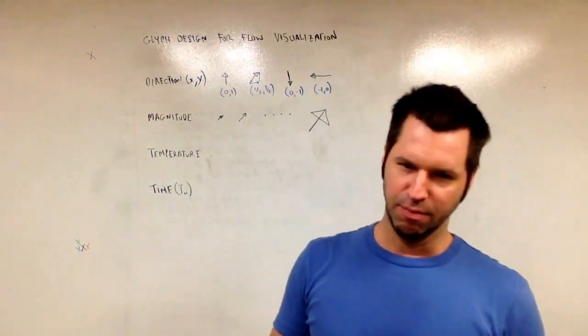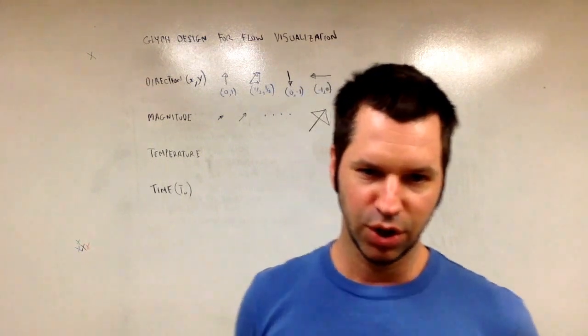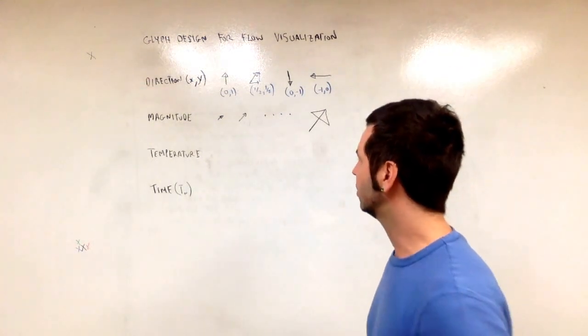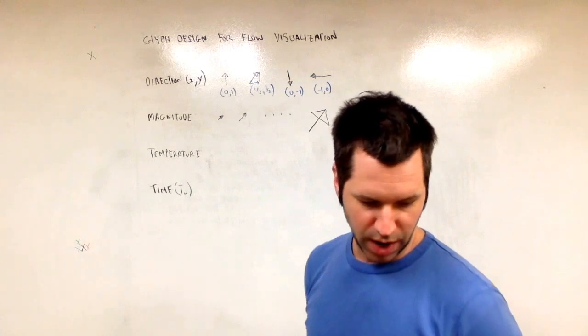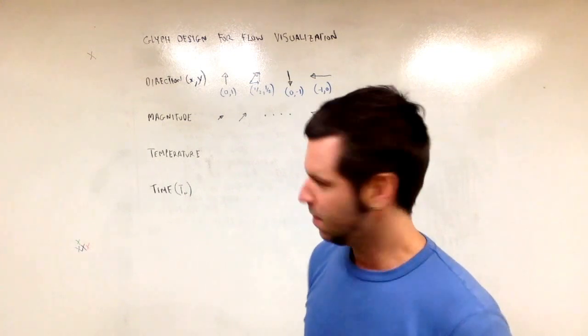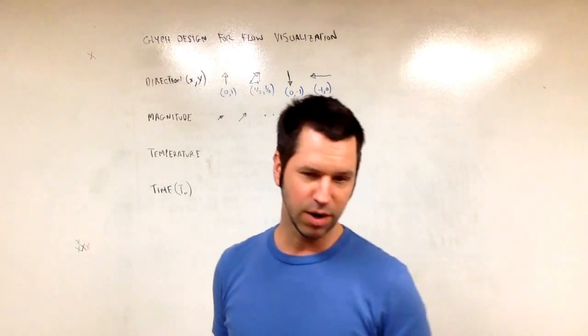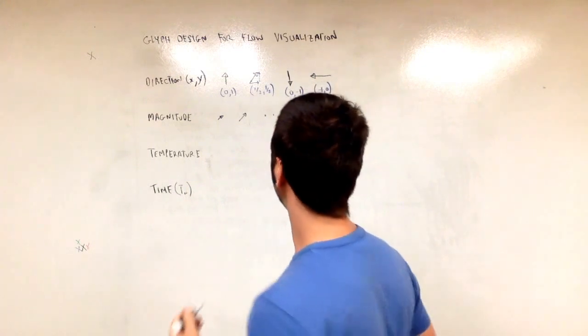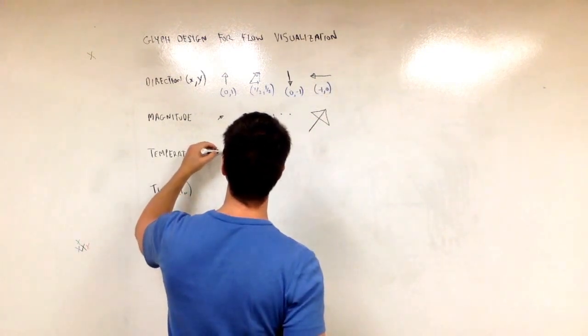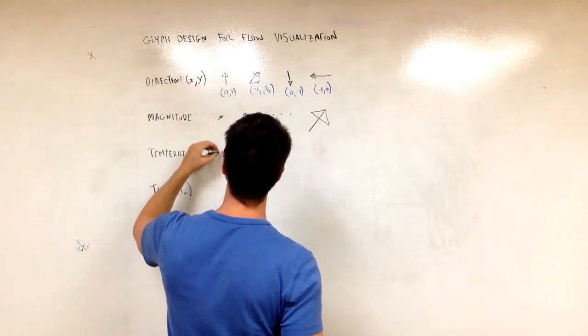What about temperature? So temperature could be encoded into color. So actually, I can try the colored markers. I don't know how well it's going to show up. But we could have black arrow for lowest temperature.